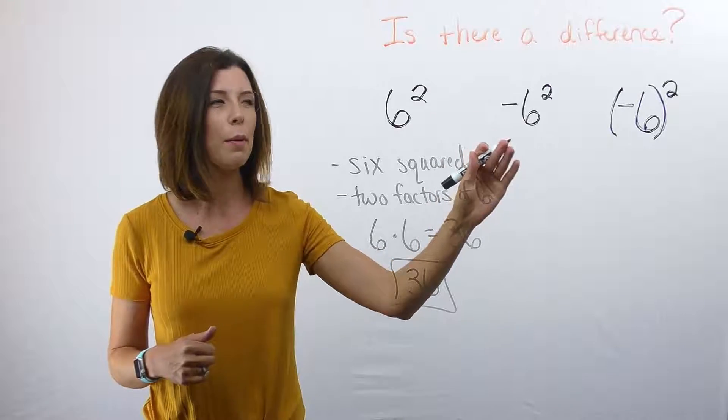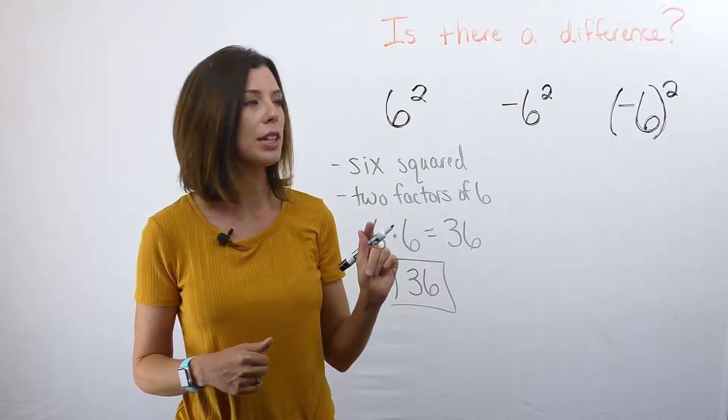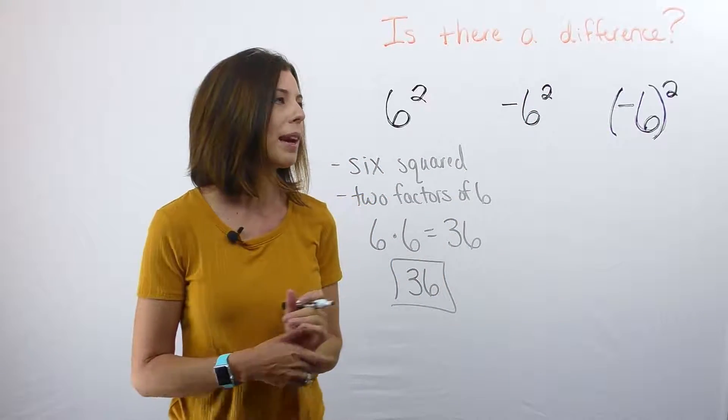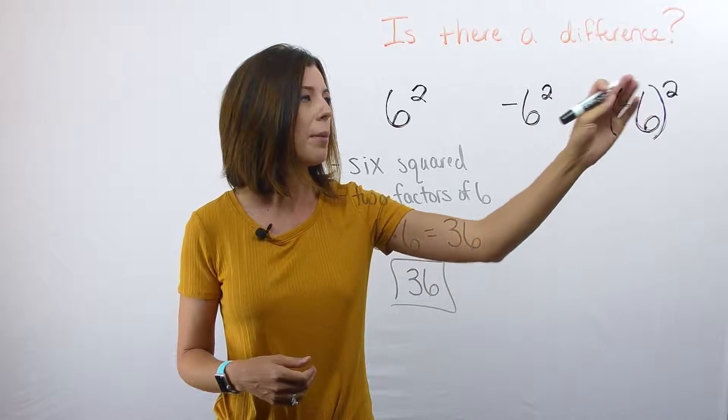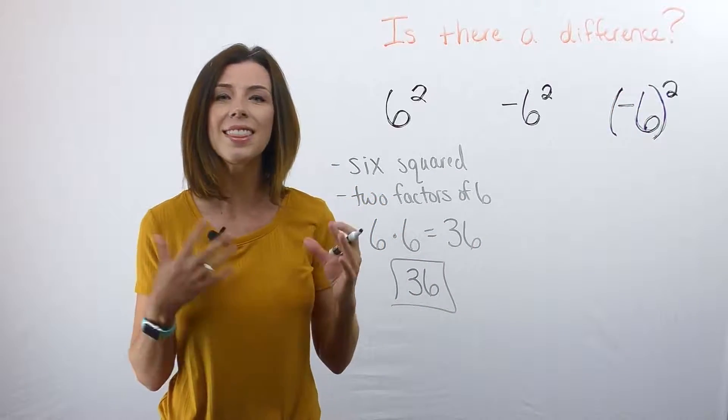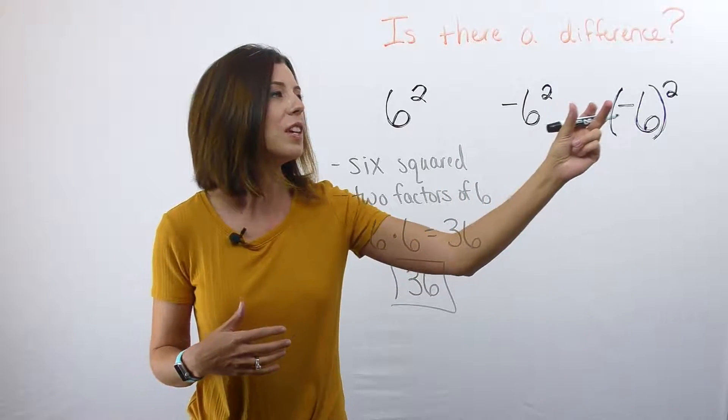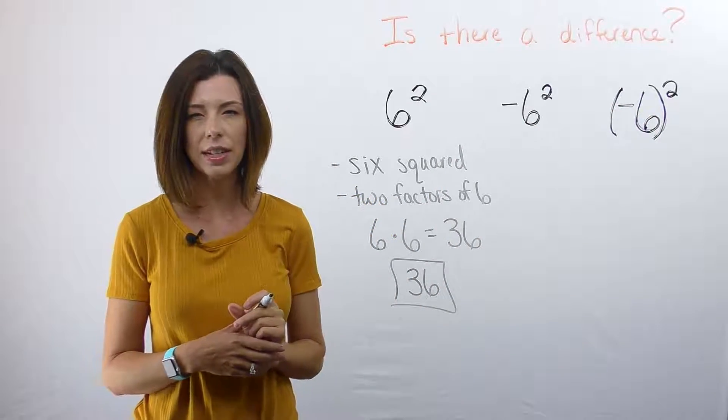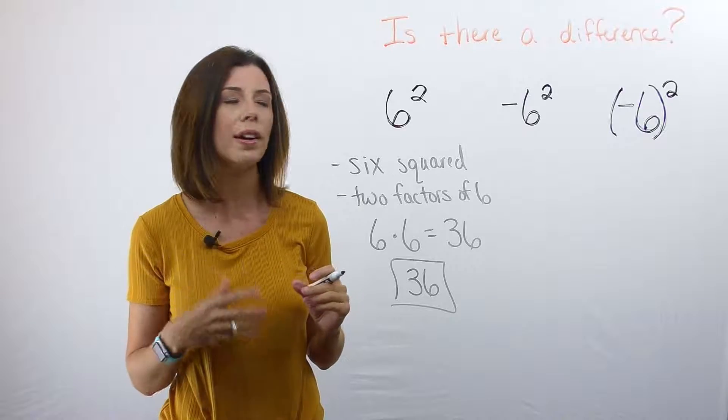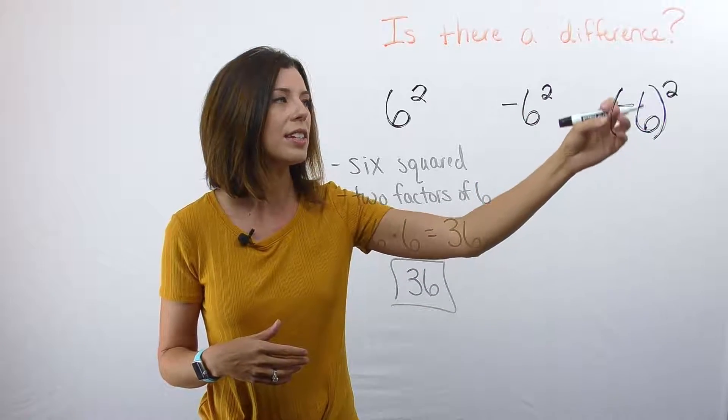Let's skip this one for just a moment because I feel like this is actually the trickiest one. Let's look at this one right here. As you can see, I've got my parentheses around this negative six and this tells me that I have the quantity of negative six. We can always read parentheses as the quantity. So the quantity of negative six squared.